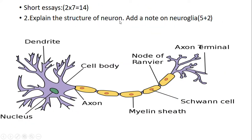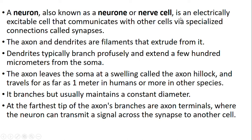Second question: explain the structure of a neuron and neuroglia. A neuron, also known as a nerve cell, is an electrically excitable cell that communicates with other cells via special connections known as synapses. The axon and dendrites are filaments that extend from the cell body. Dendrites typically branch profusely and extend a few hundred micrometers from the soma. The axon leaves the soma at a swelling called the axon hillock and travels as far as 1 meter. At the farthest tip of the axon branches are the axon terminals, which can transmit signals across the synapse to another cell.